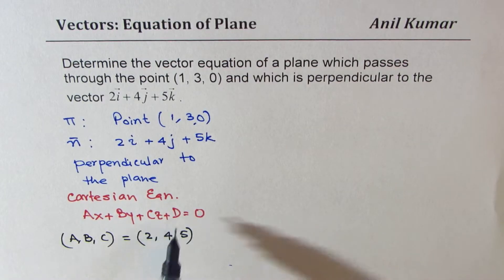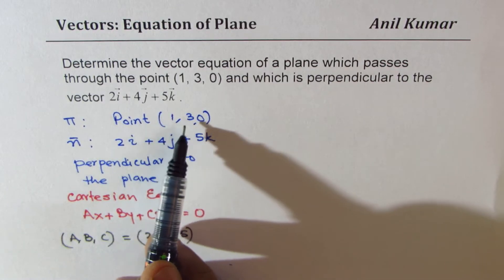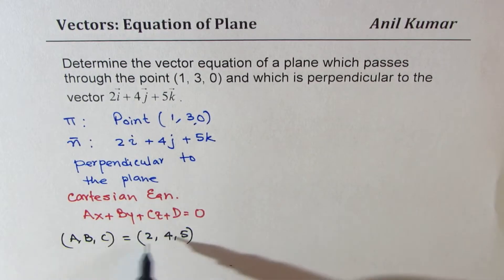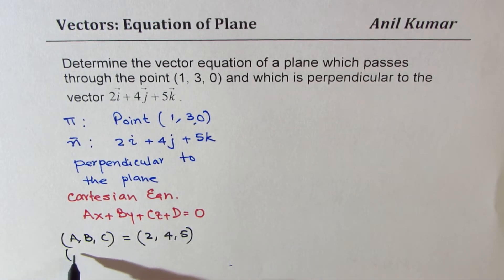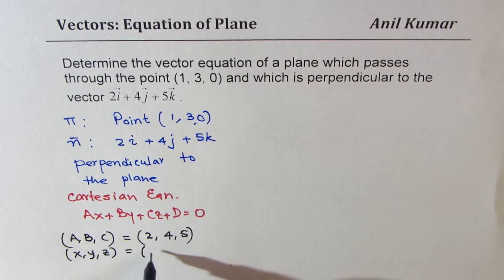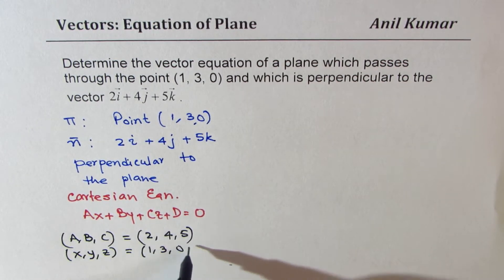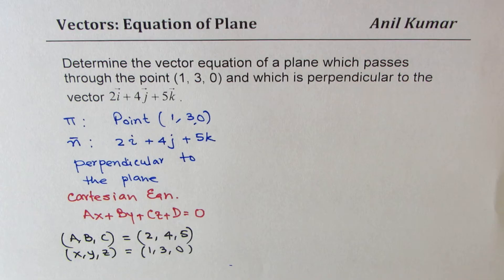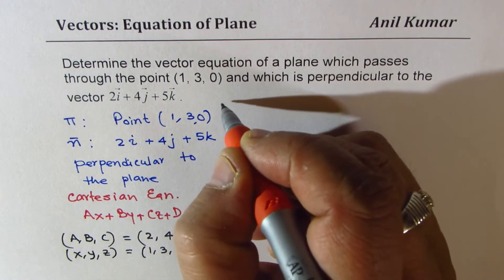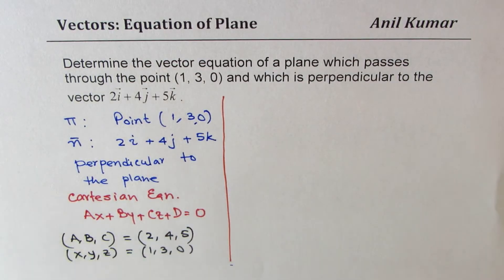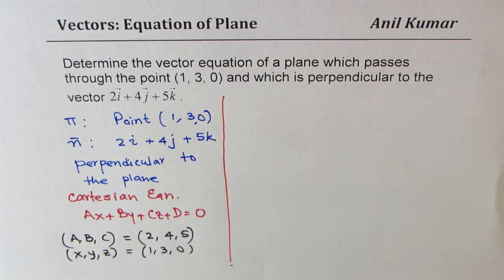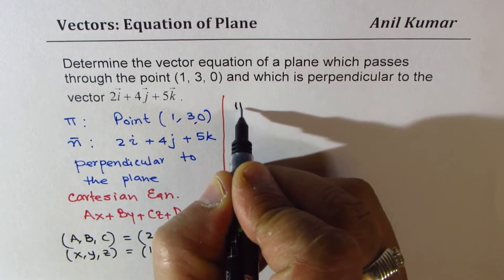Now the question is how to find D. To find D, we are going to use the point (1, 3, 0) by substituting x, y, z equal to 1, 3, 0 into the plane equation. That is our strategy — I hope that's absolutely clear. I'd like you to pause the video at this stage and find the equation.